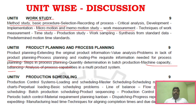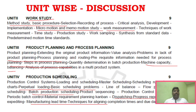Unit 4 is a tricky area with a lot of questions. It covers scheduling problems including perpetual scheduling, flow production scheduling, and batch production scheduling. The dispatching process is very important, and manufacturing lead time is also a very important topic. Line balancing is very important as well.